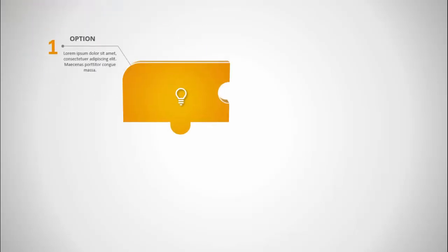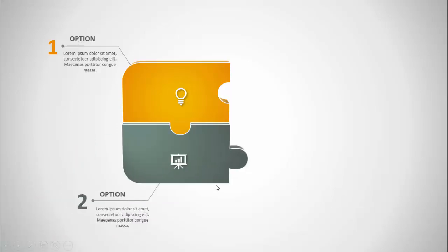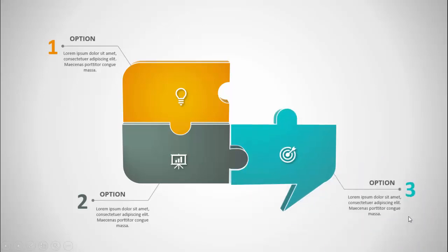In today's tutorial I'm going to show you how to create a four-step jigsaw puzzle slide design in PowerPoint. This is how the slide works: when I click, the first jigsaw puzzle comes with the icon, and then you can add the option number, the title, and the detailed text. When I click, with a different color the second option comes, then the third option, and the fourth.